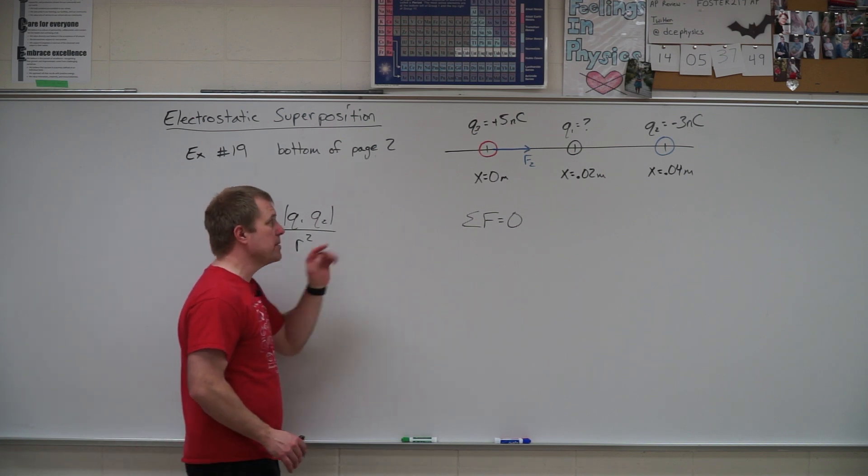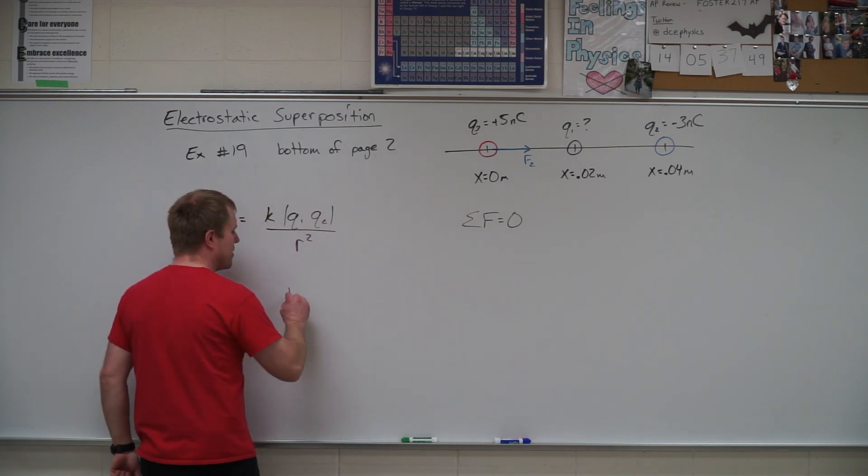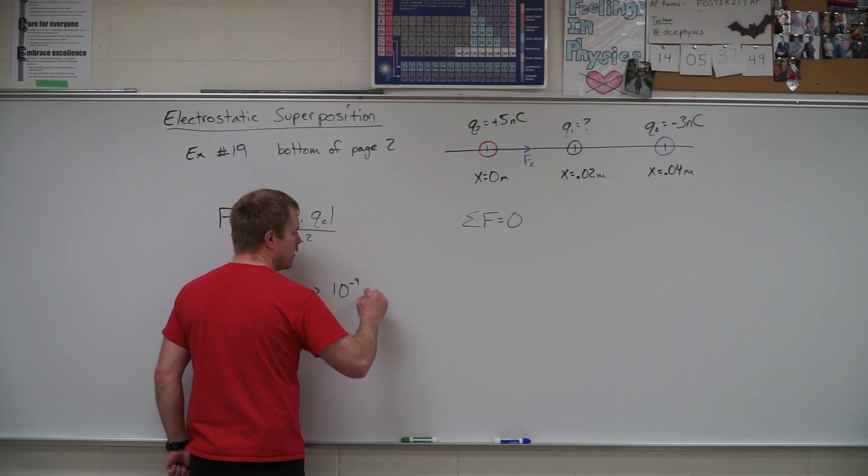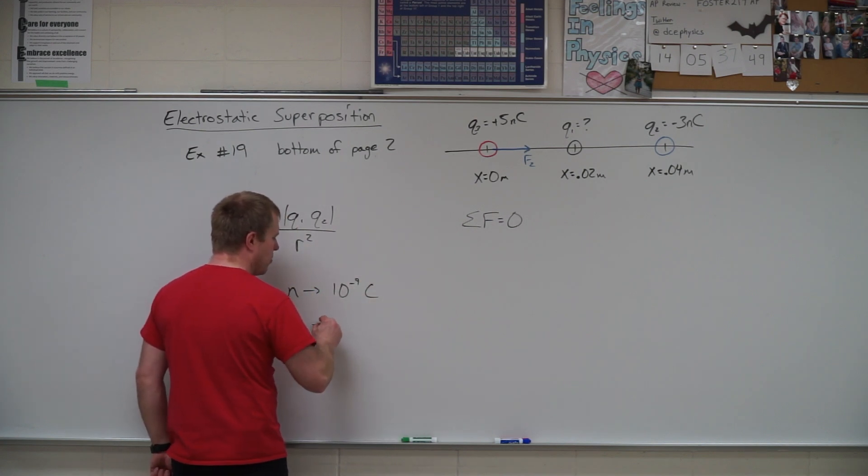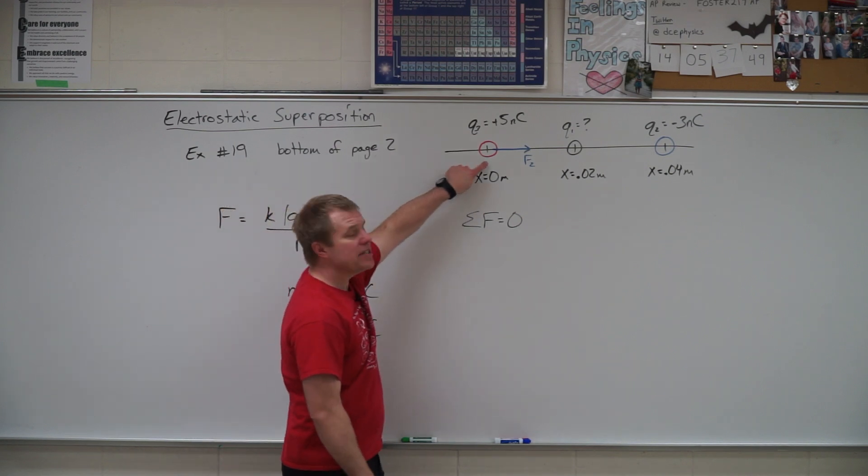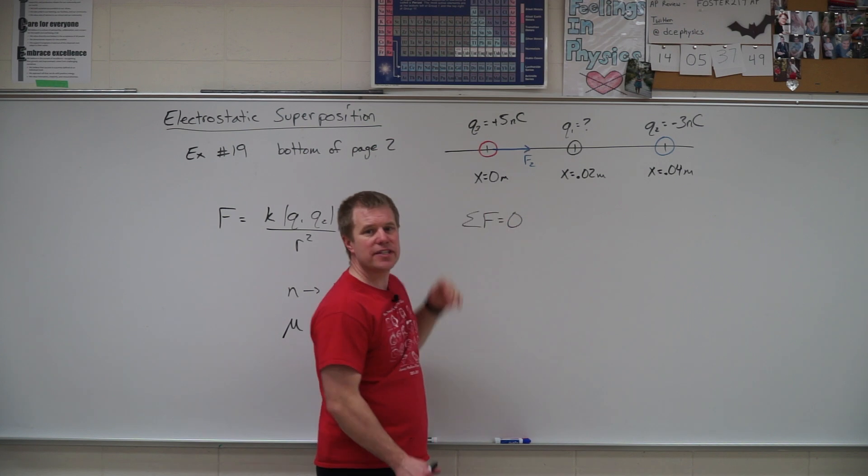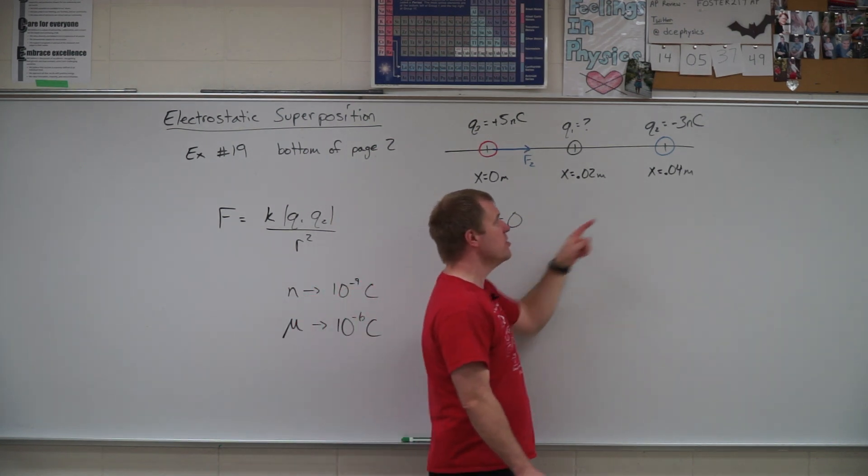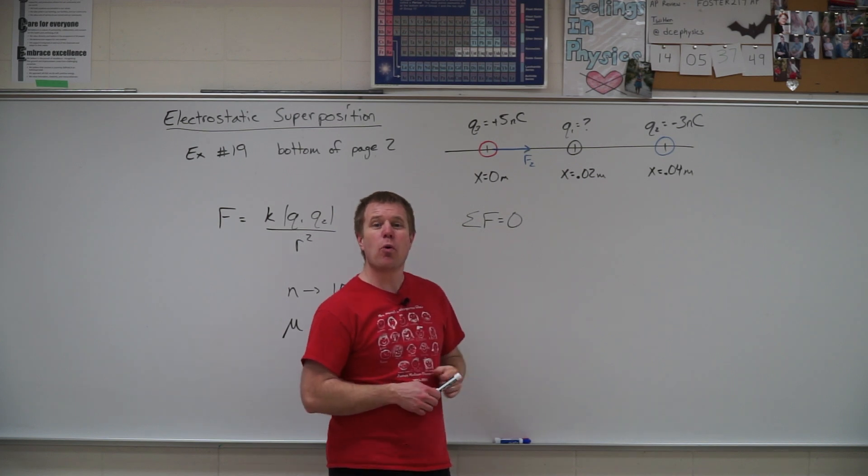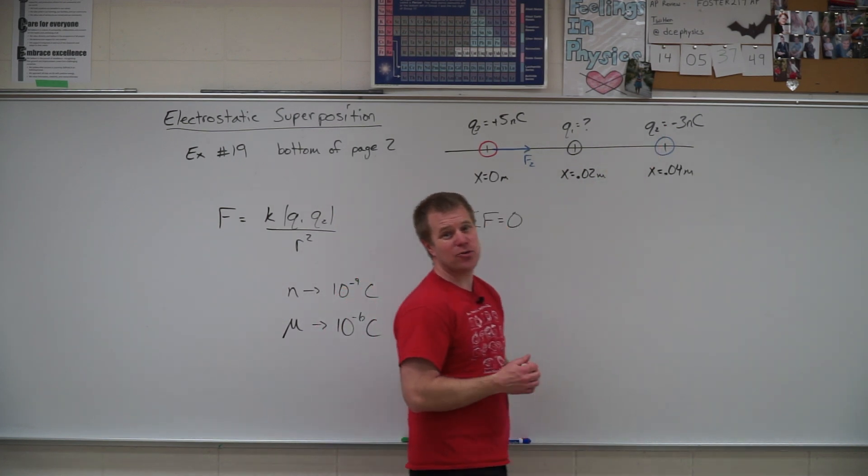So this one sets up, it says we got a positive five nanocoulomb. We're remembering that nano is ten to the negative ninth coulombs whereas micro was ten to the negative sixth coulombs. And we see that we have the positive five nanocoulombs here at x equals zero. It then tells us we have another known charge, q2, located at x equals 0.04 meters, and it has a negative three nanocoulombs charge.